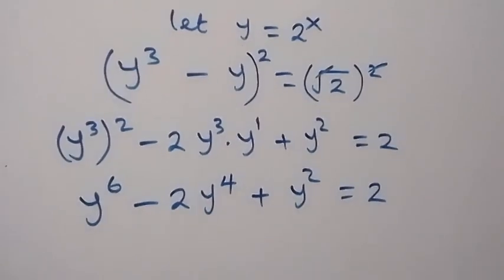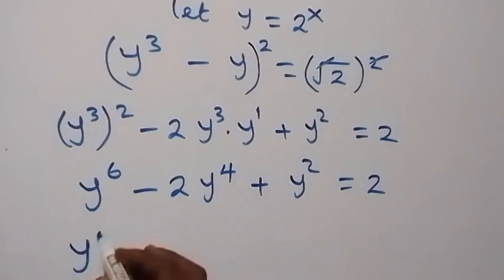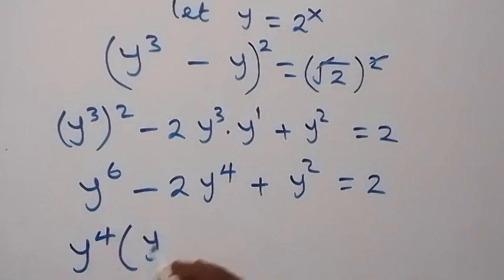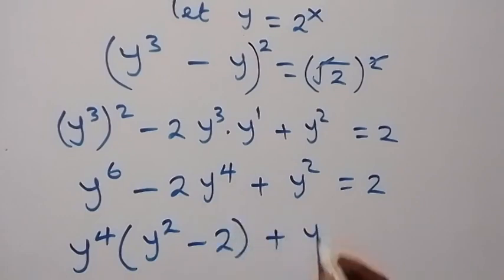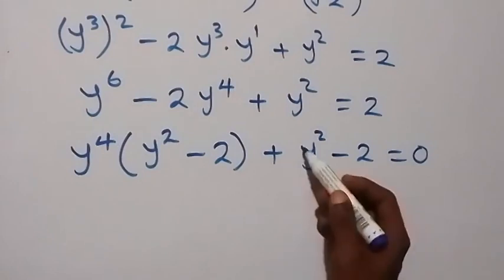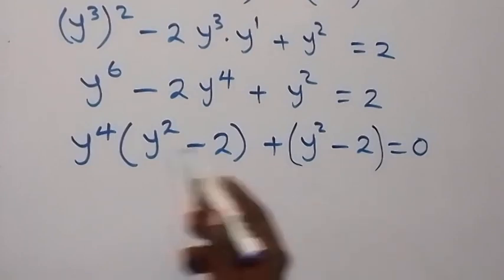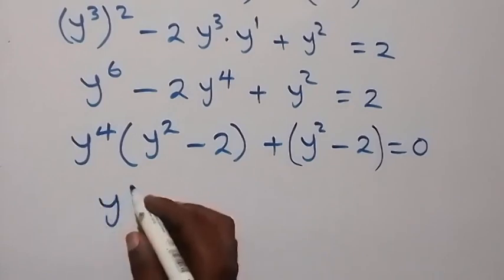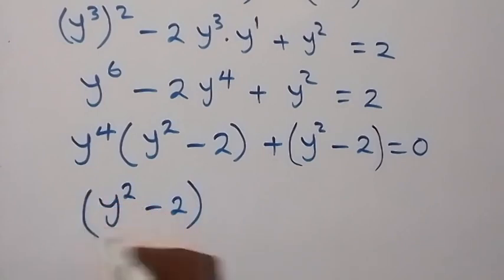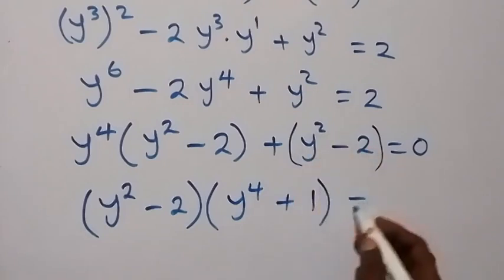In the next step, when we group these two terms, we have y raised to power 4 common, so we factor it out, and here we have y squared minus 2, then plus y squared minus 2, now equals to 0. From here, we discover that we have y squared minus 2 common, so we factor that out: we have y squared minus 2, then what is left is y raised to power 4 plus 1, then equals to 0.